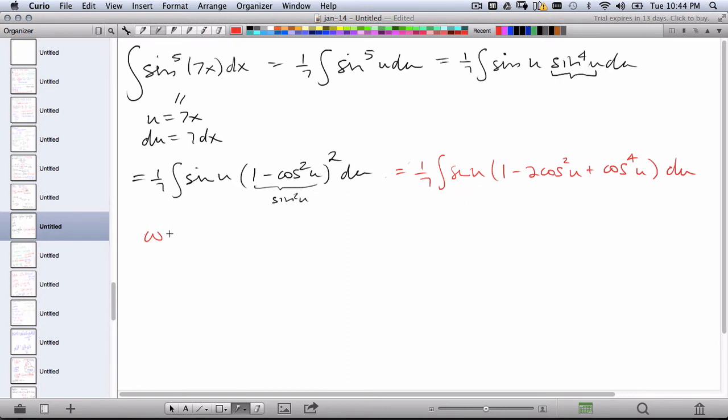So what I recommend is setting w equal to cosine u, and then dw is negative sine u du. And so in terms of our original problem, sine u du is negative dw.